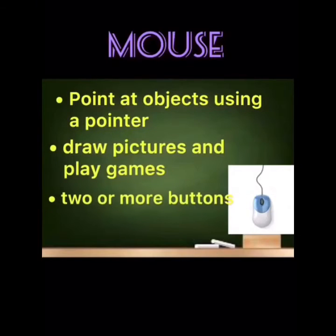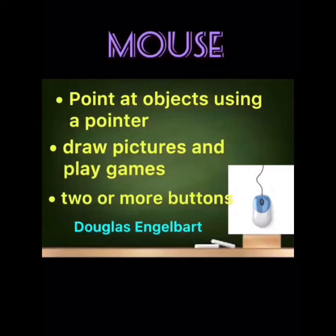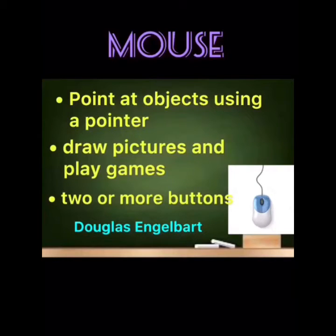We can draw pictures and play games using the mouse. It will have two or more buttons. And who found the first mouse? It is Douglas Engelbart — he invented the first mouse. So the uses of mouse are: we can point at objects using a pointer, we can draw pictures and play games, and it has two or three buttons.